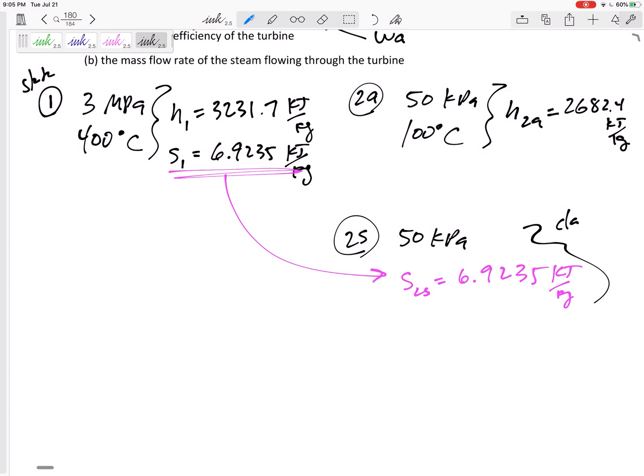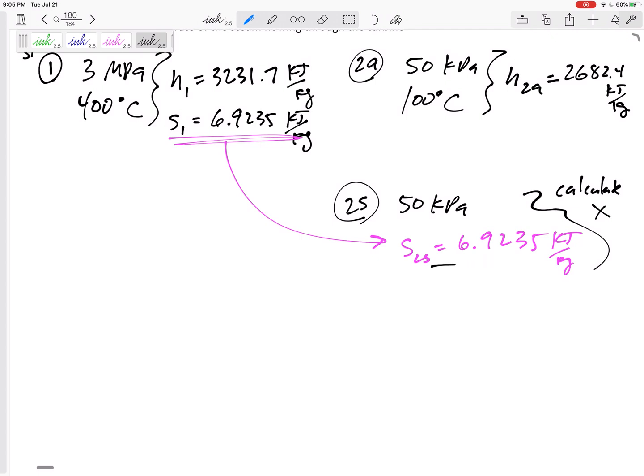Let me take this and calculate x from that entropy. So I know the entropy is 6.9235 equals sf plus x sfg. So the s equals sf - if I read off the sf for saturated liquid it's 1.0912 plus x times sfg, which is 6.5019. Quality is 0.897.